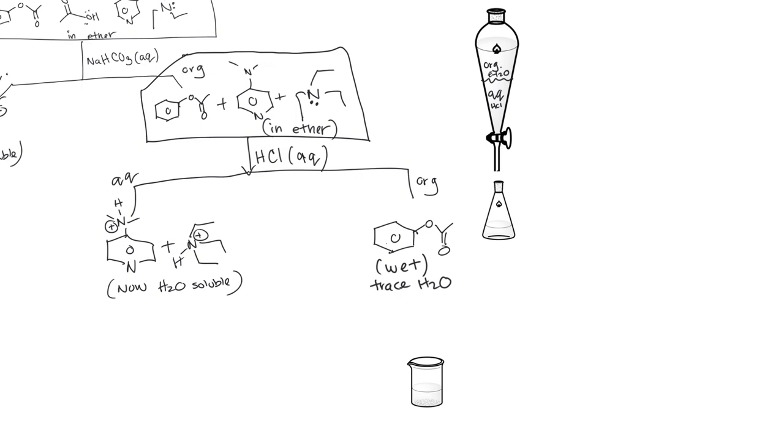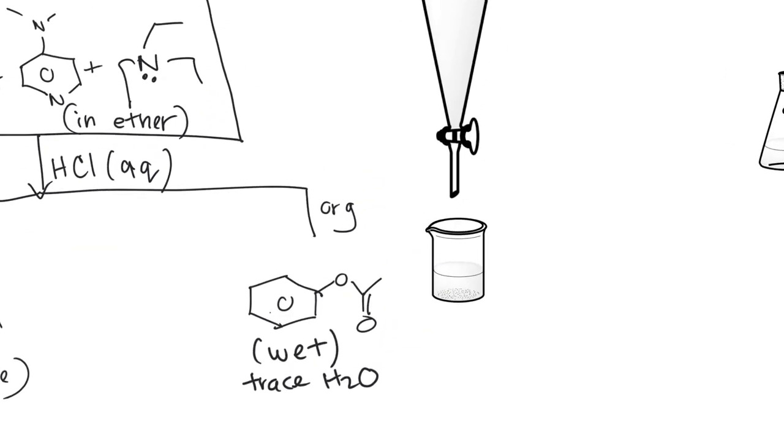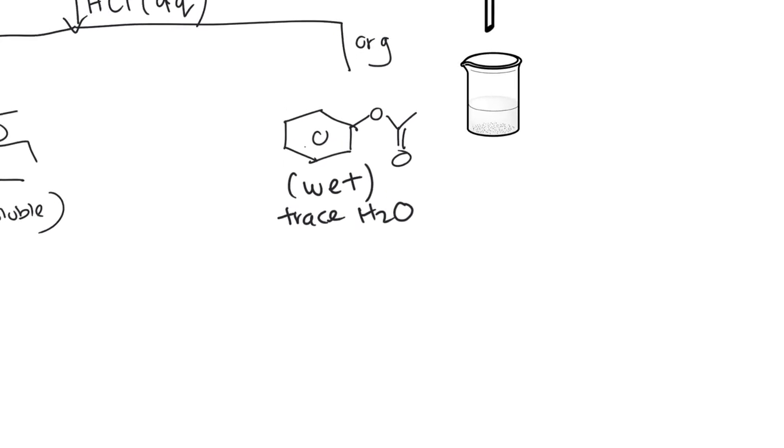we drain out our aqueous. And it's gone. We're left with only the organic. We drain that out into our beaker. And at the bottom of our beaker, we sprinkle a little bit of drying agent, often something like magnesium sulfate or sodium sulfate. Those are the common ones. So let's put that here.